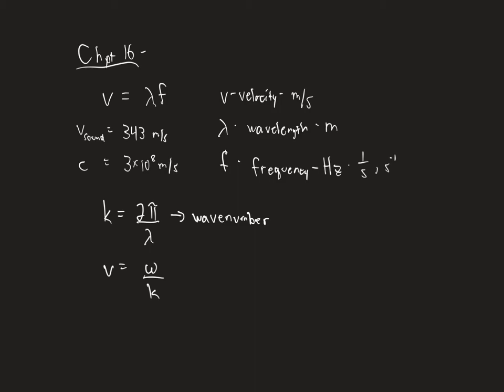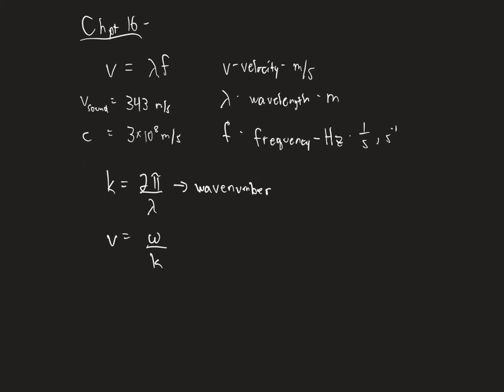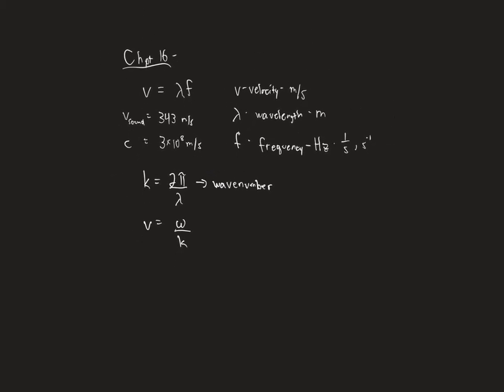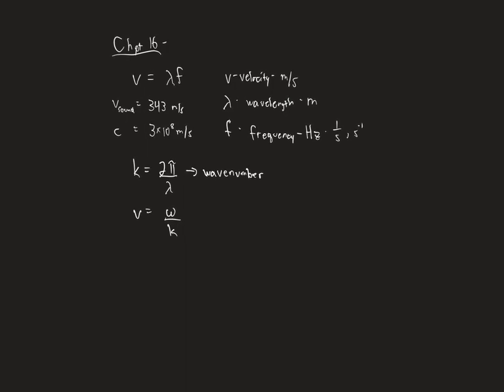This is another way to write wave speed. And these are shorthand notations. These Ks and these omegas just make it easier to do some more advanced calculations when you move on in physics. So we learn them in introductory physics. Last key equation that we want to know for Chapter 16, that's going to be super important, is the periodic wave equation.